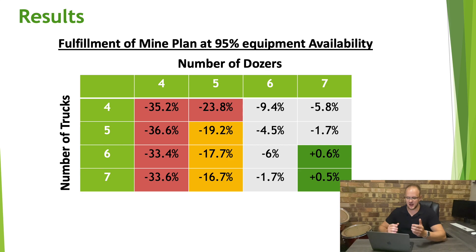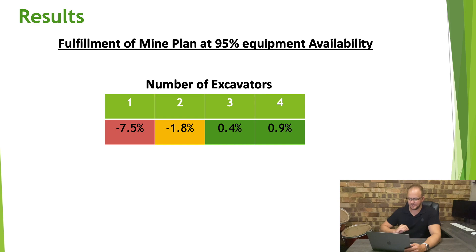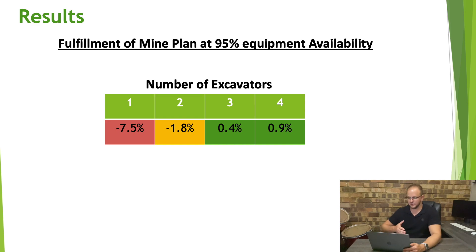Now the next question is how many excavators we need. We redo the sensitivity analysis, this time varying excavators from one to four — in the previous example we had unlimited excavators so they were never the constraint. Now that we've determined the trucks and dozers, we increase excavators from one to four to find where we start meeting the plan. The table shows that as soon as we reach three excavators we start meeting our plan, and whether we use three or four is buffer capacity we can install in the mine.